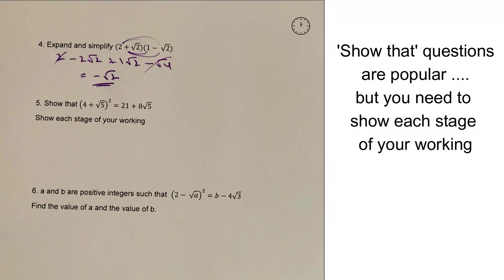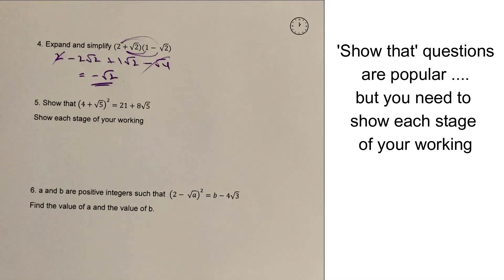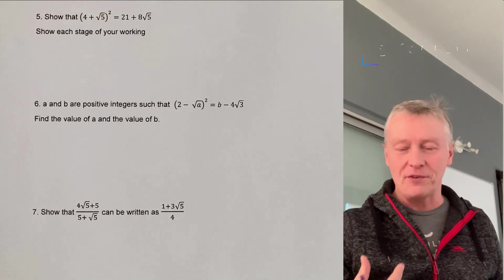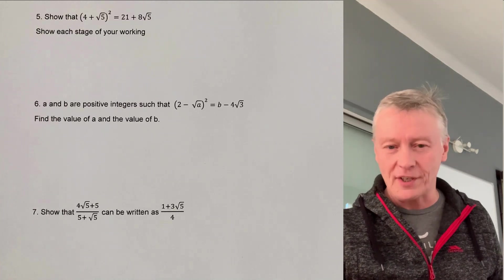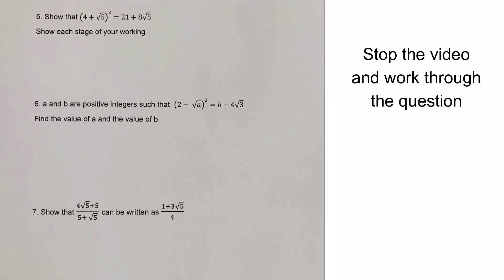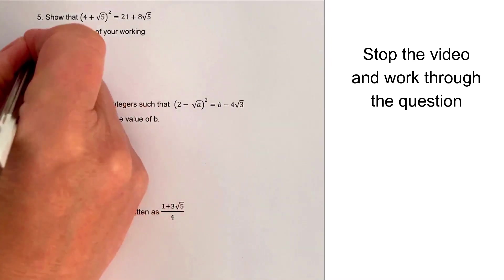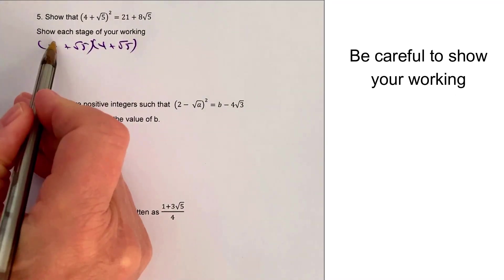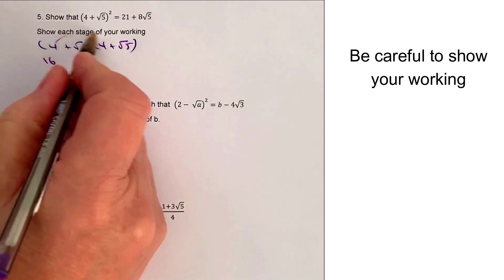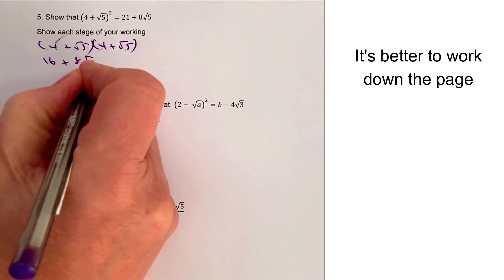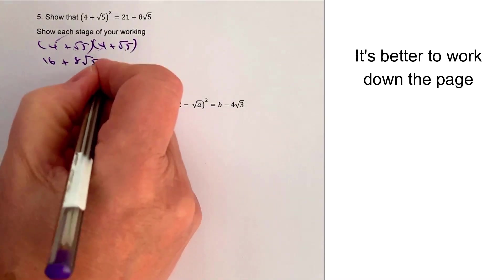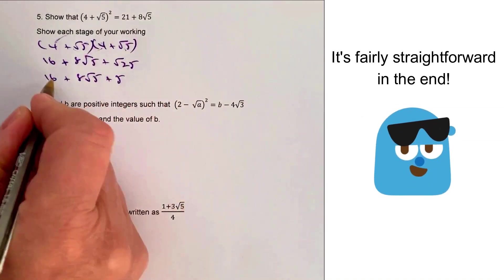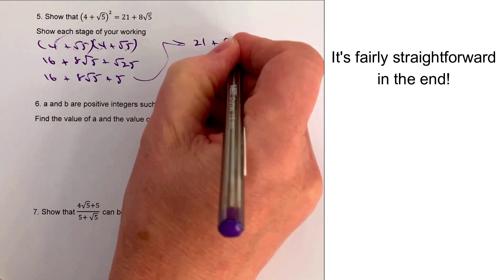Question 5 is a 'show that' question. It's important to show each stage of the working — usually about 3 marks. We expand (4 plus root 5) squared as (4 plus root 5) times (4 plus root 5). 4 times 4 is 16. Then 4 times root 5 plus 4 times root 5 is plus 8 root 5. And root 5 times root 5 is root 25, which is 5. So we get 16 plus 8 root 5 plus 5, which is 21 plus 8 root 5.